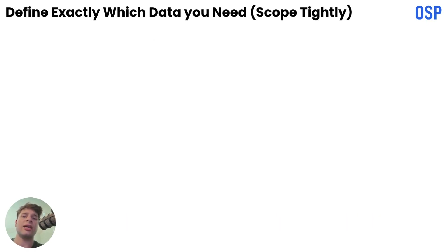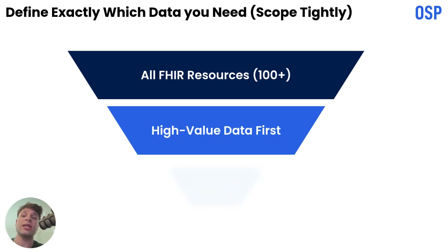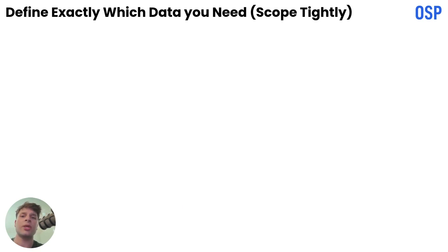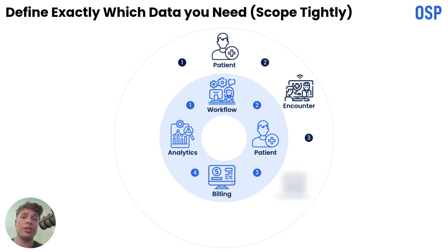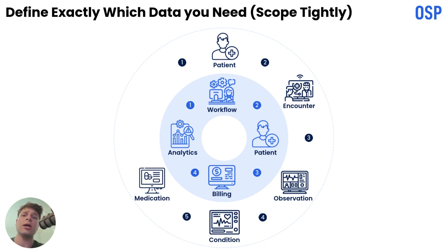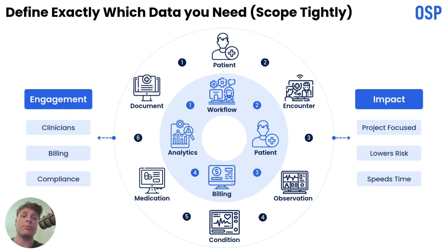Don't try to integrate everything at once. FHIR has more than 100 resources — start with the data that delivers business value. Ask yourself: are you solving clinician workflow, patient engagement, billing, or analytics? That determines the resources you need. For most MVPs, we recommend a compact list: Patient, Encounter, Observation for vitals and labs, Condition for diagnoses, Medication, and DocumentReference for notes. Engage clinicians, billing, and compliance to prioritize. This keeps the project focused, lowers risk, and speeds time to value.